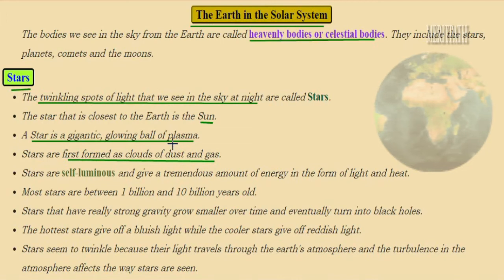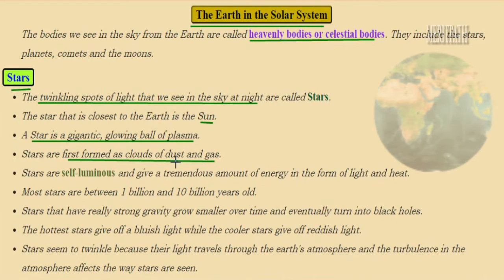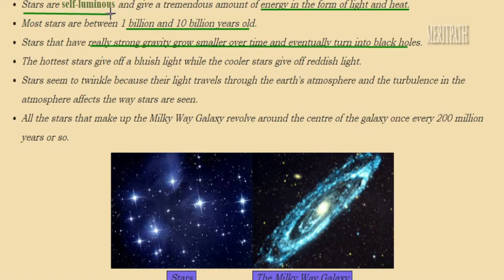A star is nothing but a gigantic glowing ball of plasma, formed by dust and gas. Stars are self-luminous objects — that means they emit their own light and give out a lot of energy. They are not taking light from any other objects; they light up by themselves. This energy is in the form of light and heat. The twinkling shining stars have energy in the form of light energy as well as heat energy.